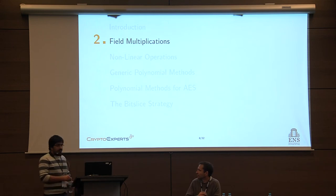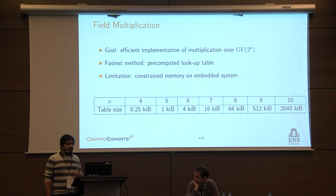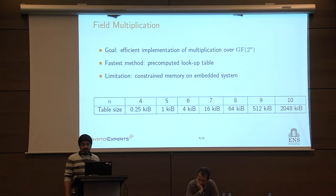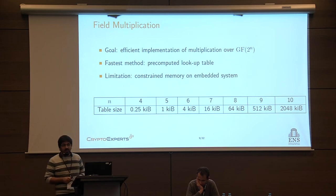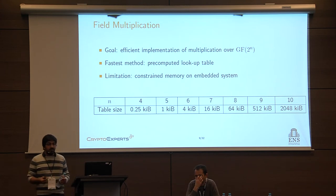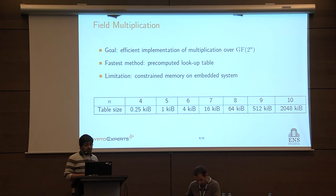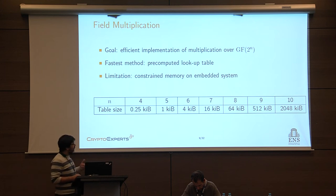Now let's jump into the subject. How to perform field multiplication? The goal of this section is to select an efficient implementation of multiplication over any finite field GF(2^N) for any parameter N. Intuitively, the fastest way is to fully tabulate the output of the operation, requiring a table of size 2^(2N). However, in the context of embedded systems or smart cards, there is a memory constraint and you cannot always use this. For example, if N equals 8, you would need a table of 64 kilobytes, which is too large for those contexts.